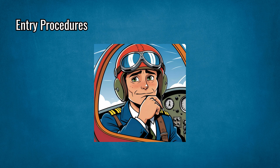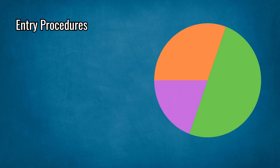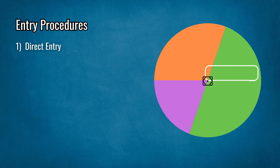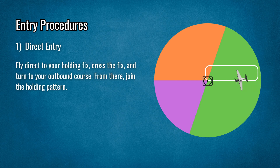Entry procedures. One of the most challenging parts of holding is determining the correct hold entry on the fly. Let's review the three types of hold entries to set you up for the perfect holding pattern. One: direct entry. This is the simplest hold entry you'll fly. Fly direct to your holding fix, cross the fix and turn to your outbound course, then join the holding pattern.